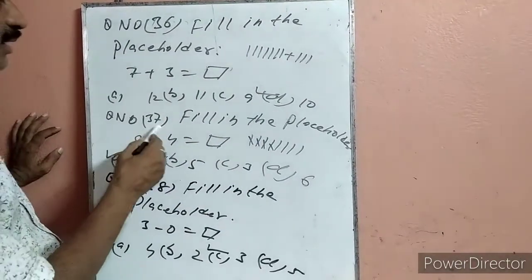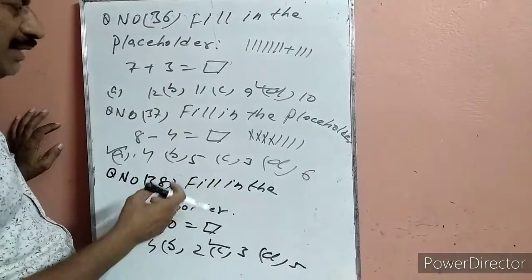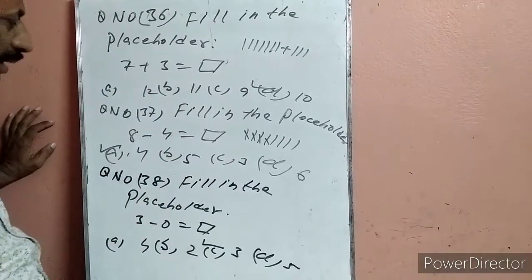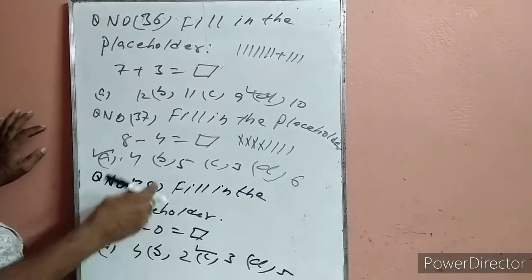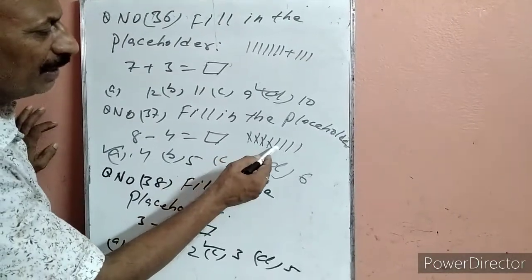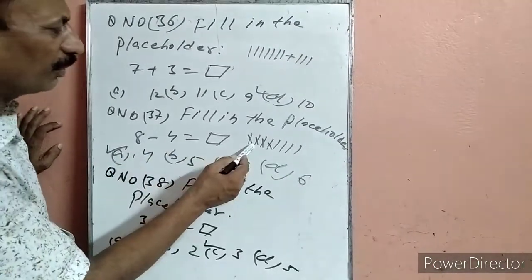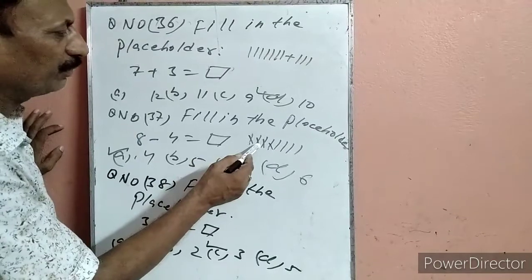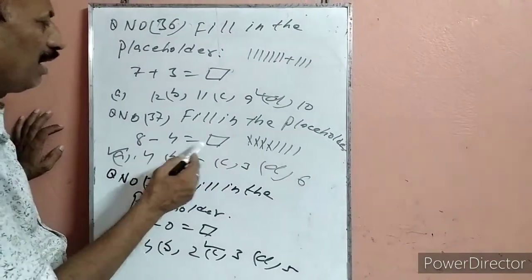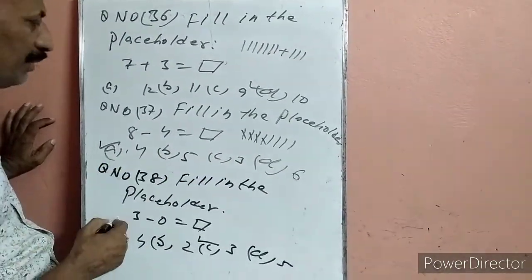Question 37: Fill in the placeholder — 8 minus 4. 8 line drop करेंगे, 4 को cross करेंगे: 1, 2, 3, 4. बच गया: 1, 2, 3, 4. Answer 4. A पर हम टिक लगा दिया.